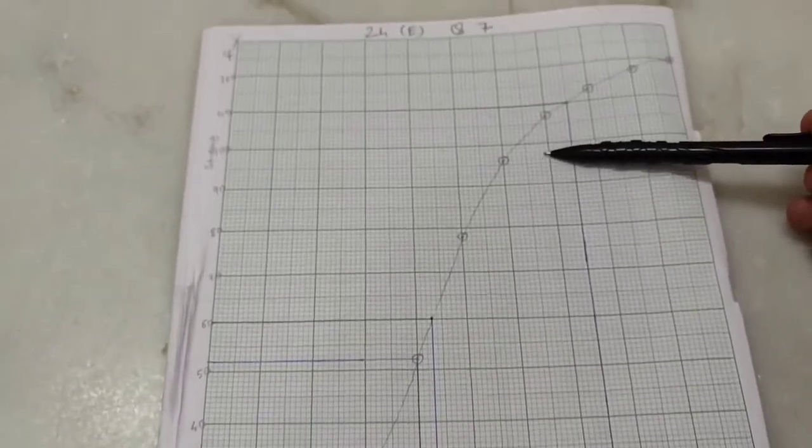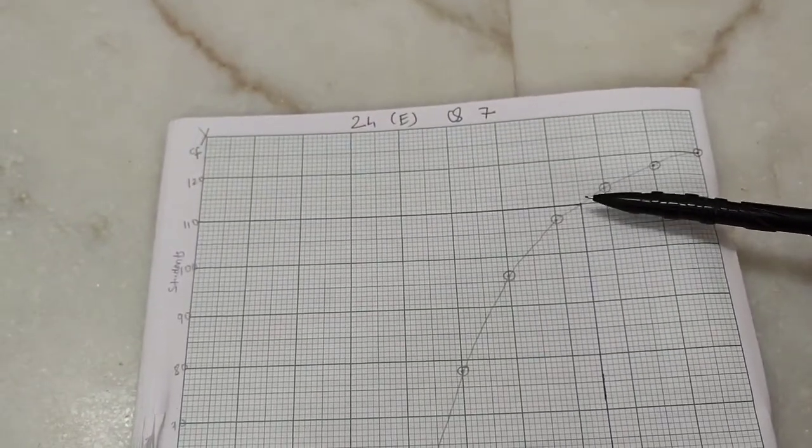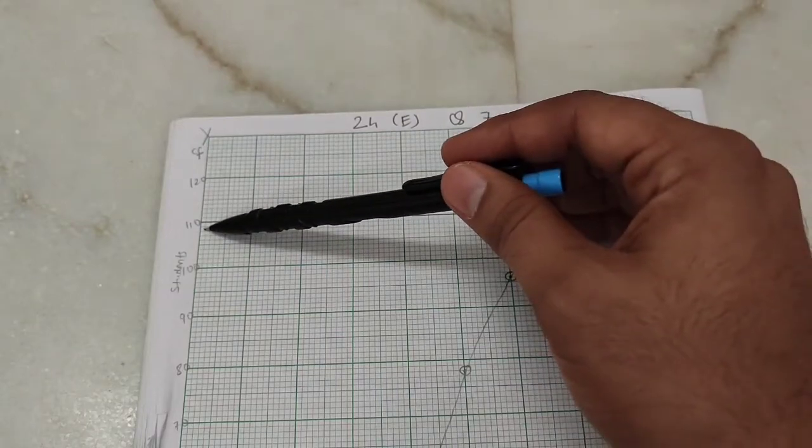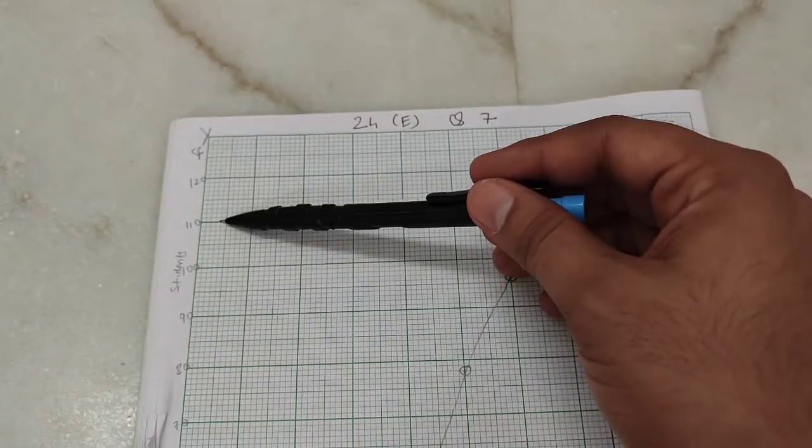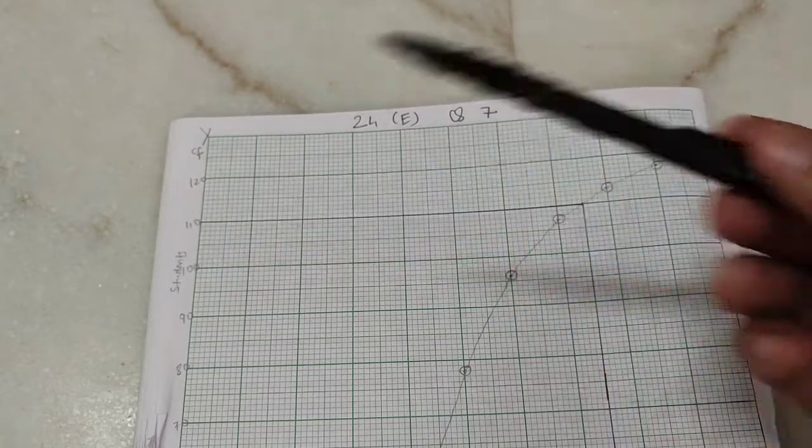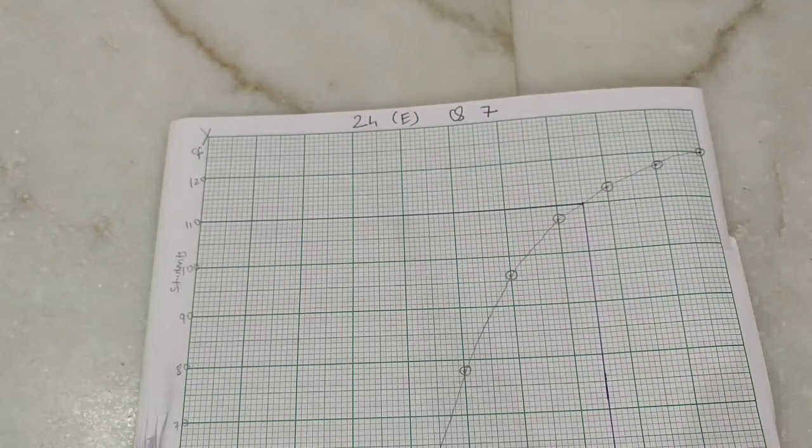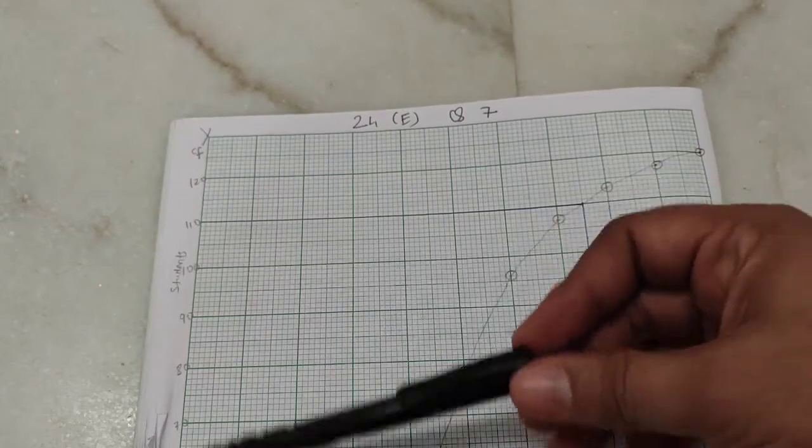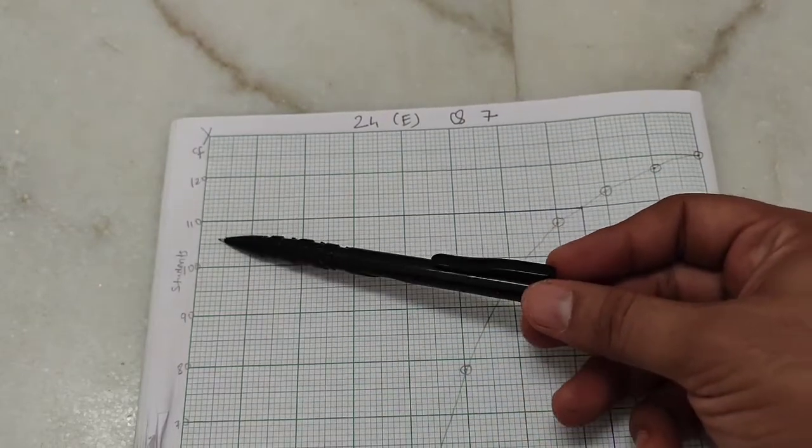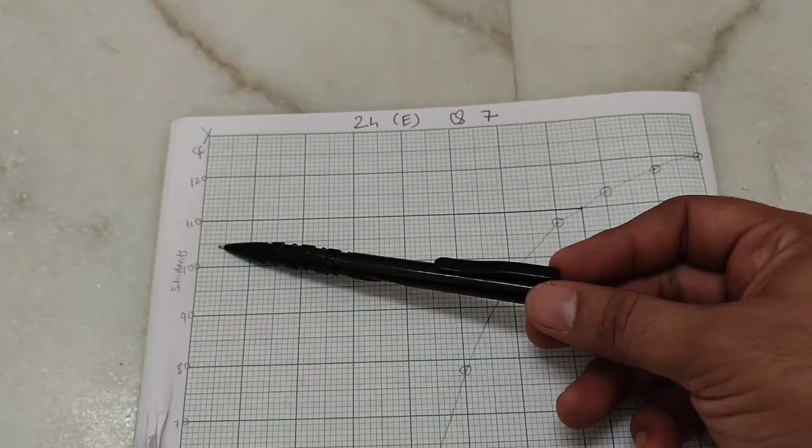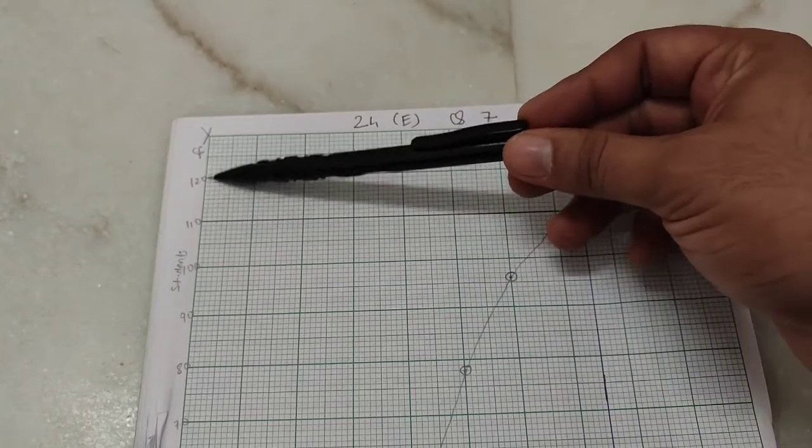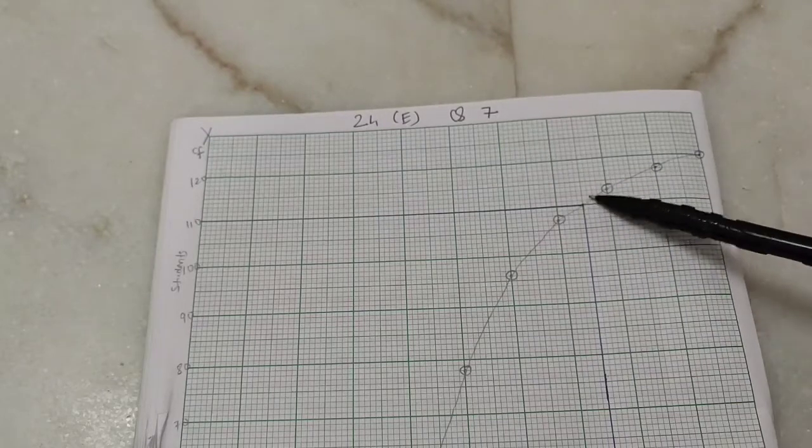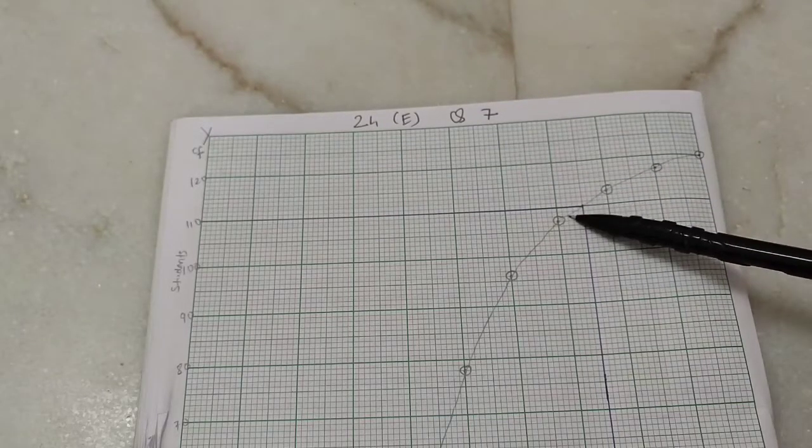75 percent marks means 75 marks in this sum. So we draw a line here till it intersects the graph, and from where it intersects we draw a line straight to the y-axis. It cuts at 110. What does it mean? It means that the first 110 students out of 120 students got less than 75 marks, and the remaining students, that is 10 students, got more than 75 percent marks.